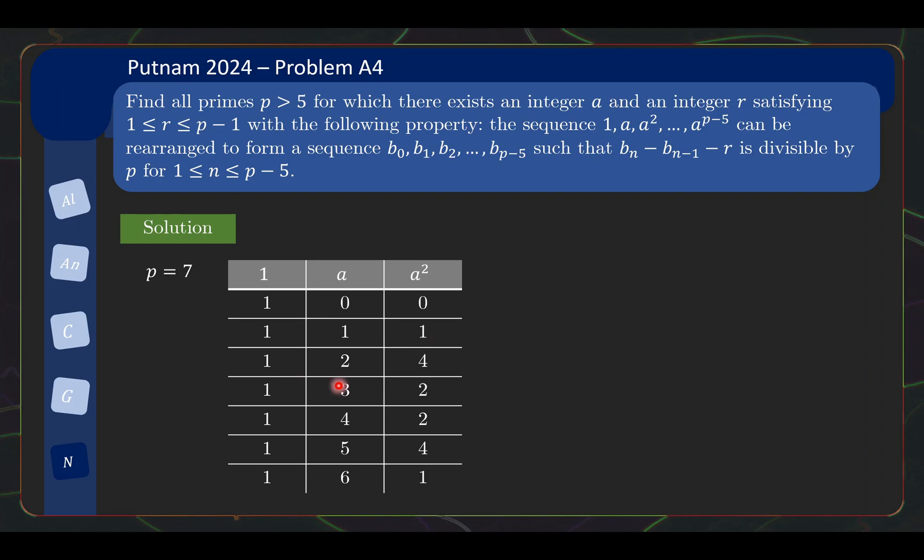I have the 7 different possibilities. What you want is you want to be able to rearrange them so that consecutive differences have the same remainder. Note that 1, 1, 1 doesn't work even though the consecutive differences are all remainder 0 because your remainder needs to be not 0. But thankfully, this solution works. A = 5 works because you can rearrange this to 4, 1, 5 and the consecutive differences are all congruent to 4 mod 7. So p = 7 works, and the solution is given by a = 5, r = 4.